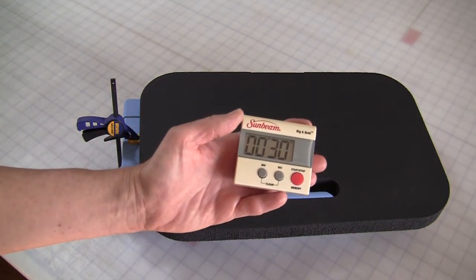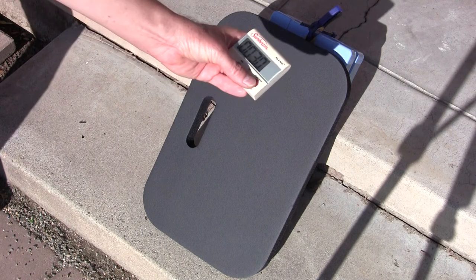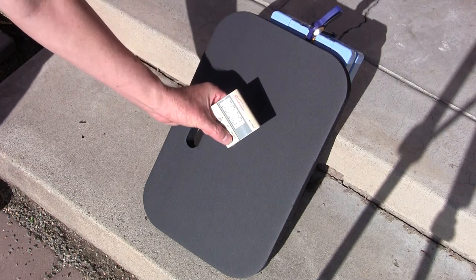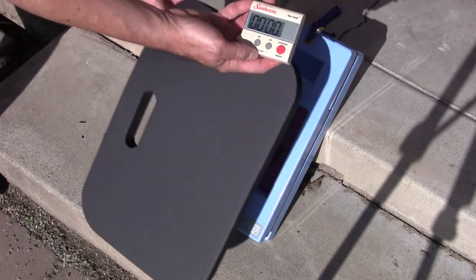Set your timer to 30 seconds. Position the unit to face the sun. Start the timer and remove the cover. Cover as soon as the timer goes off.